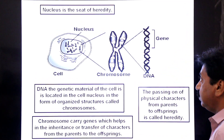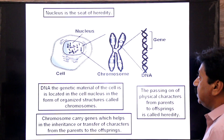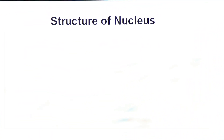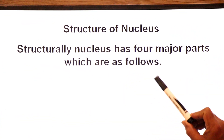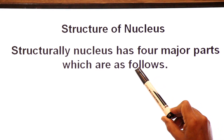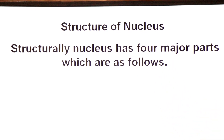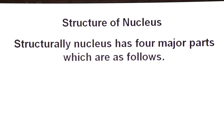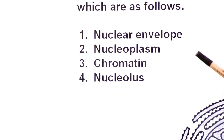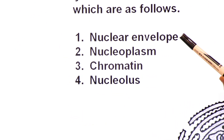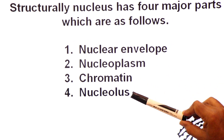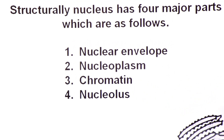Now let's move on to the parts of the nucleus — the structure of nucleus. Structurally, the nucleus has four major parts: first, nuclear envelope; second, nucleoplasm; third, chromatin; and fourth, nucleolus.